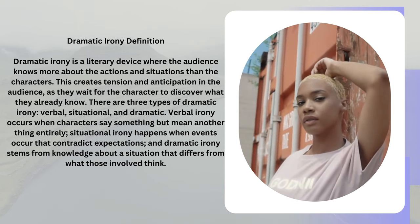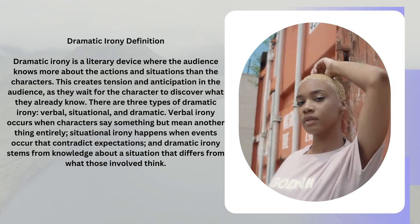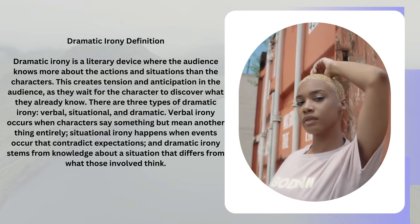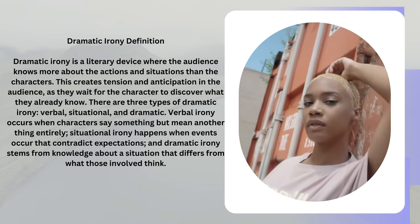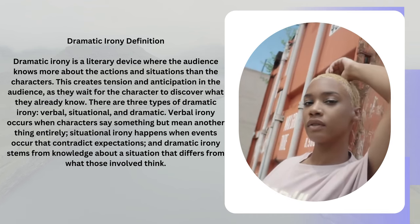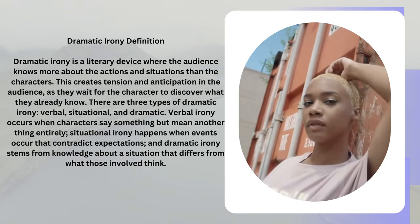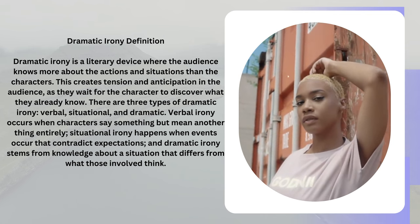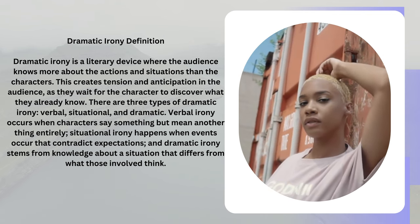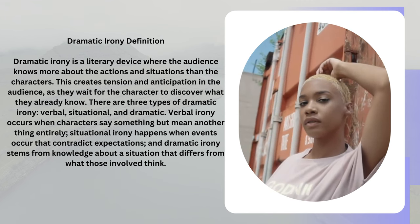There are three types of dramatic irony: verbal, situational, and dramatic. Verbal irony occurs when characters say something but mean another thing entirely. Situational irony happens when events occur that contradict expectations. Dramatic irony stems from knowledge about a situation that differs from what those involved think.